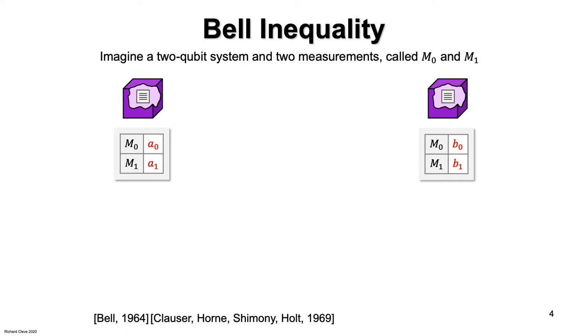Here we'll only care about the parts of the tables that are associated with the measurements M0 and M1. Call the predetermined values for the first particle A0 and A1. Call the predetermined values for the second particle B0 and B1.